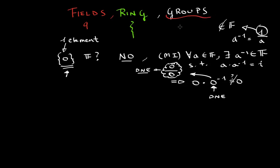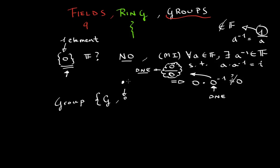If something fails to be a field, it doesn't necessarily have to be a complete waste — you could have it as a group. So what is a group? A group is a set with only one operation that combines two elements. We denote it as a combination of a given set G and one operation — represented as an open circle, since it could be multiplication or addition. The four properties that groups have are as follows. The first one is closure.